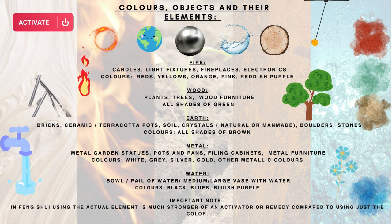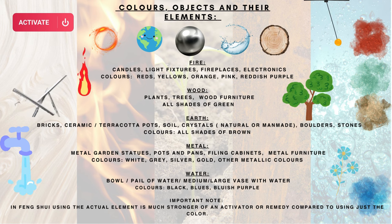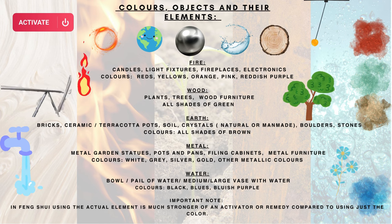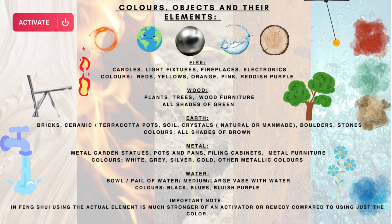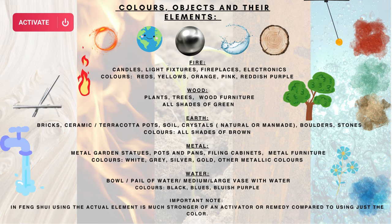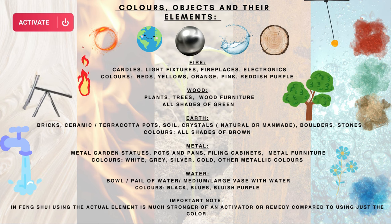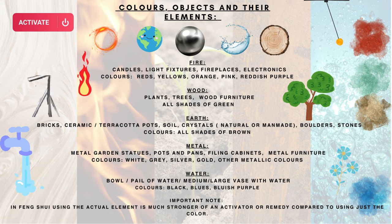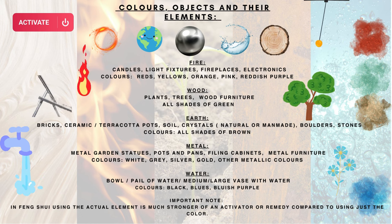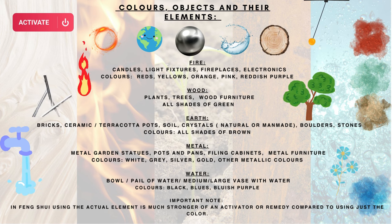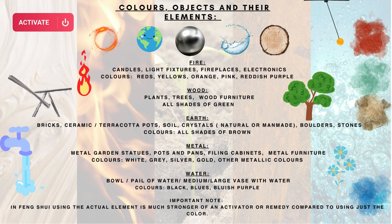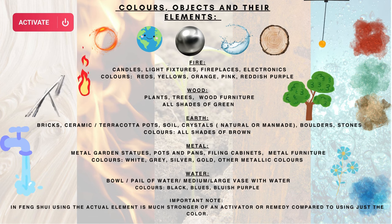Another way of activating an area is relating to colors. It's important to keep in mind that colors are not as strong as using the actual element, but to quickly go over — we have the different colors, objects, and their elements here to show you what can activate based on the stars residing in that sector. For example, fire elements include candles, fireplaces, light fixtures, and electronics — all of that is fire energy. The colors relating to that are reds, yellows, oranges, reddish purples, and even some pinks.